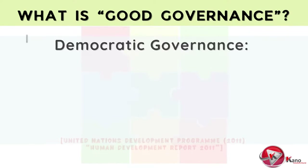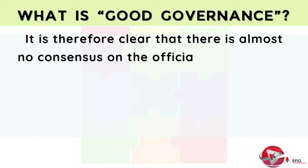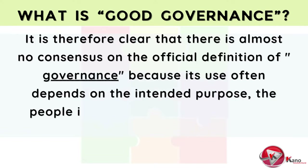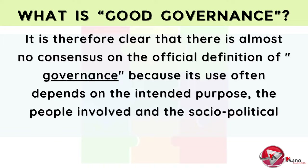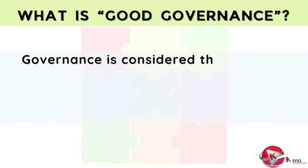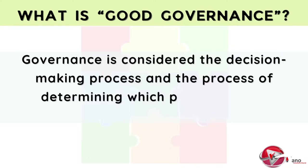It is therefore clear that there is almost no consensus on the official definition of governance, because its use often depends on the intended purpose, the people involved, and the socio-political environment of the term. In general terms, governance is considered the decision-making process and the process of determining which policies will be implemented and not implemented.